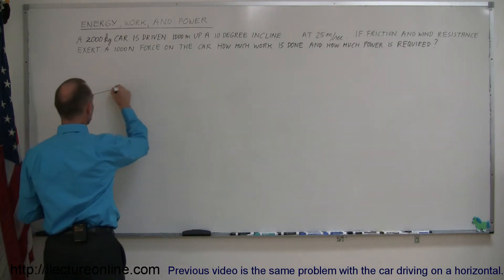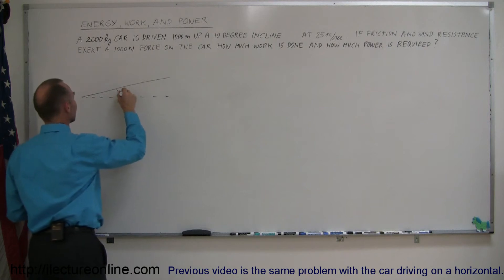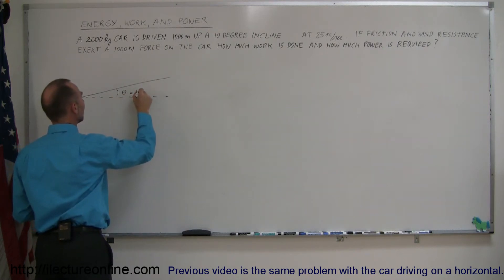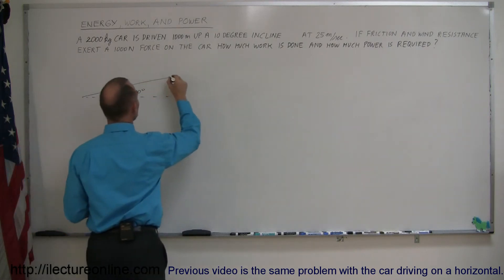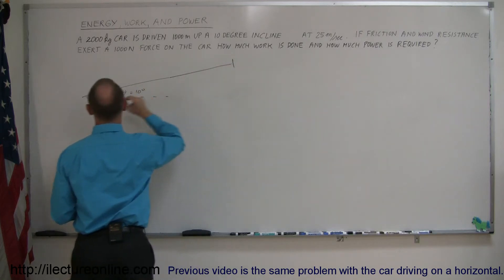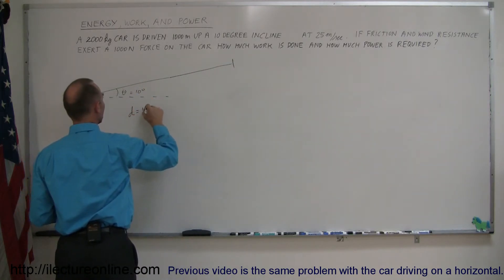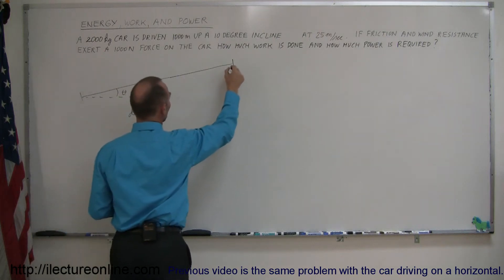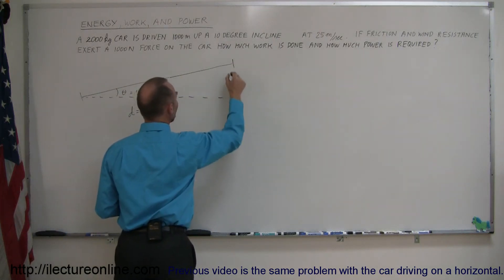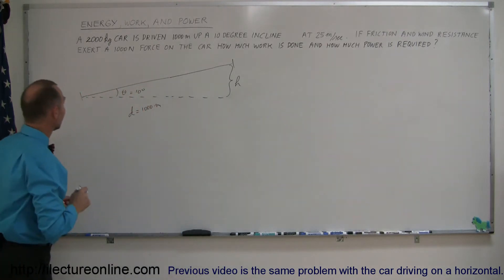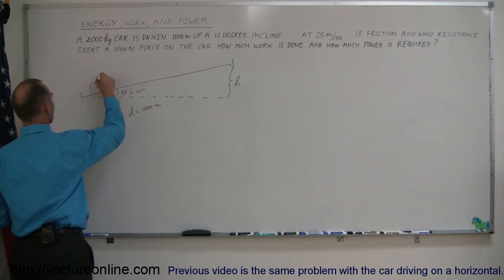Alright, the drawing, which is necessary to figure out what's going on. We have an incline at an angle of 10 degrees. Let's say that the incline is 1,000 meters long, so the distance equals 1,000 meters. Of course, the car is going to gain a height, h, after 1,000 meters. Let's draw a little car here. Here's our little automobile. Looks pretty fancy.